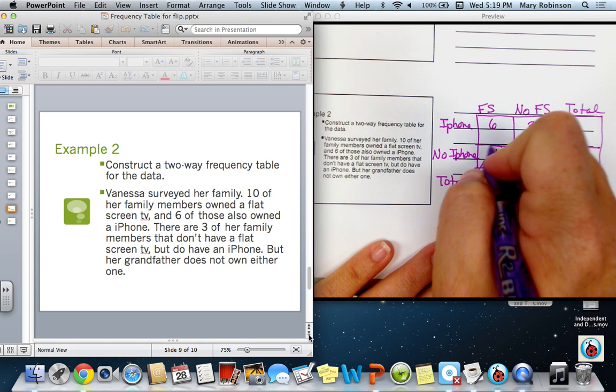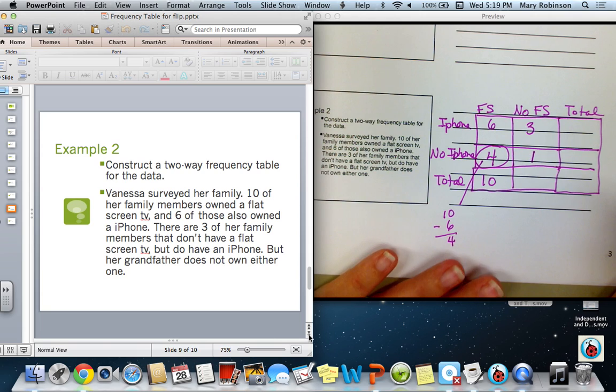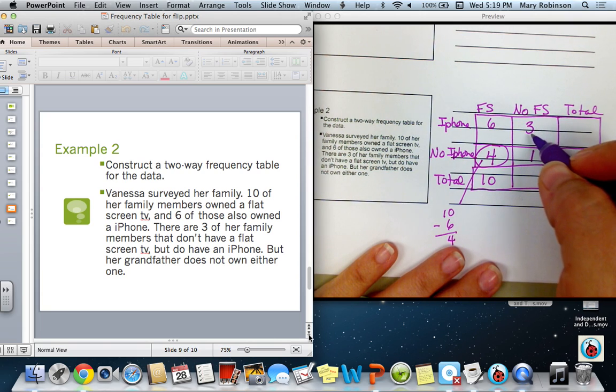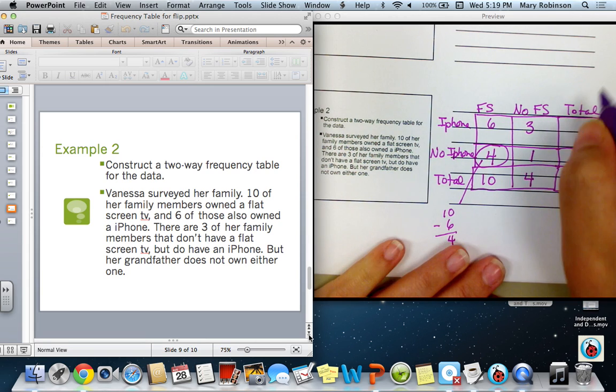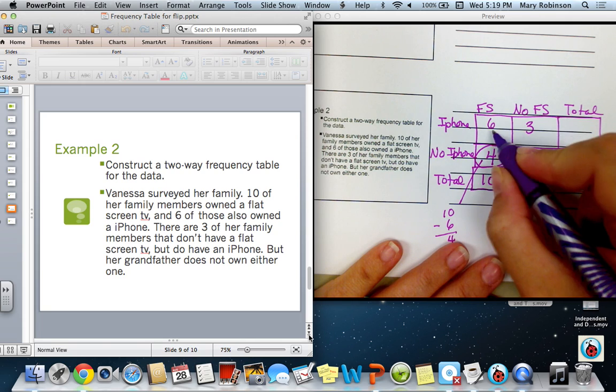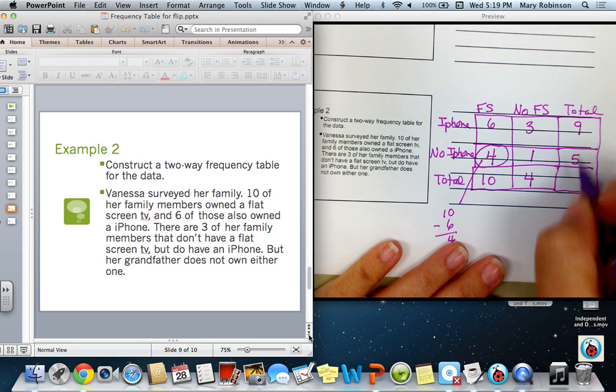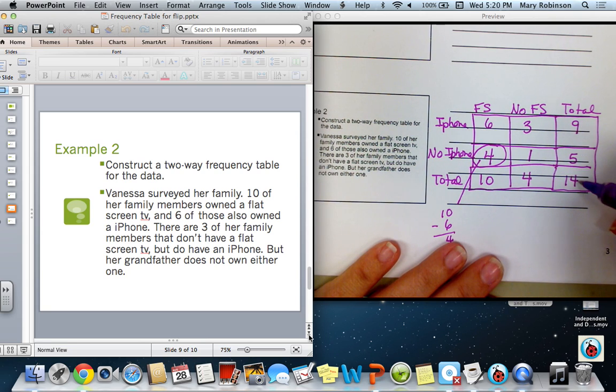And then find our totals. So, three plus one is four. If I add these horizontally, six plus three is nine, four plus one is five, nine plus five is fourteen. And, of course, we again want to verify that nine and five add up to fourteen, and ten plus four is fourteen.